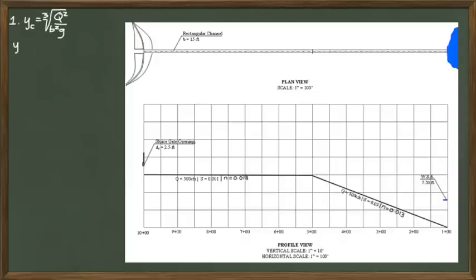Since this is a rectangular channel with a base width of 15 feet and a design flow rate of 500 cubic feet per second, then we can calculate the critical depth directly using this formula. I get a critical depth of 3.26 feet.